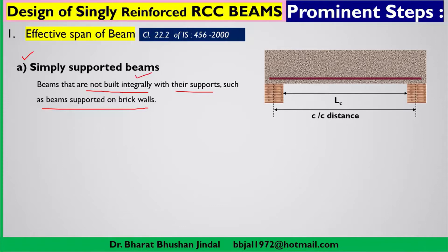First, the walls are constructed, and later the beam is placed on these walls — concreting takes place afterwards. The clear spacing between the two walls, which are the simple supports, is LC, the clear span. The distance from center to center of the walls is the center-to-center distance.